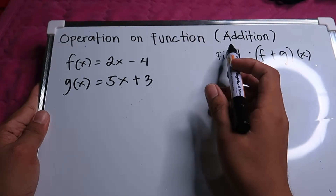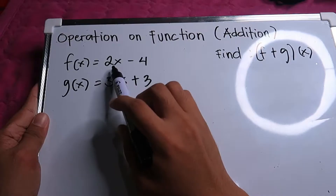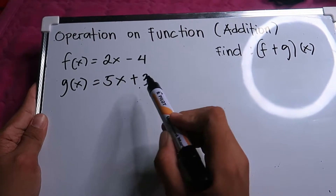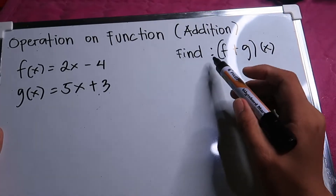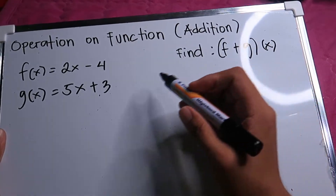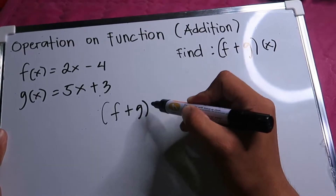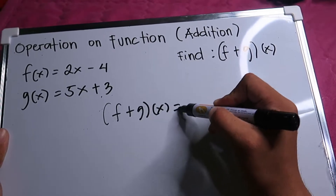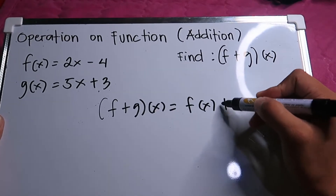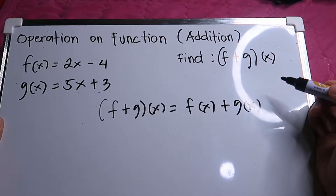Operation on functions — addition. The function f(x) is equal to 2x minus 4, and g(x) is equal to 5x plus 3. The question is: find the quantity of (f + g)(x). Now, (f + g)(x) is the same as f(x) plus g(x) — they are just separated.